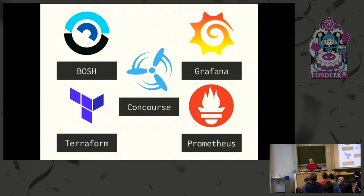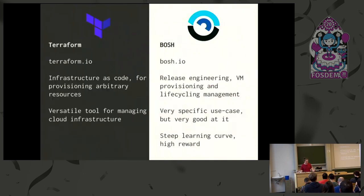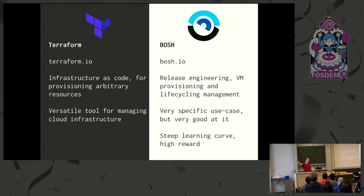Terraform is pretty ubiquitous — infrastructure as code. You declare resources: I want this network, this VPC, these subnets. It applies them; you make changes, it works out the differences. It's really versatile.